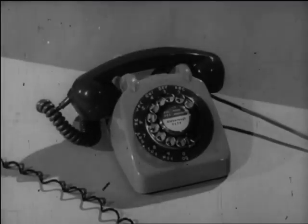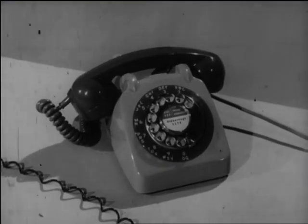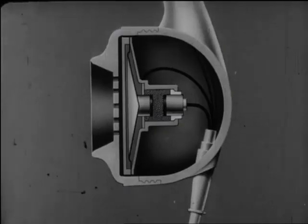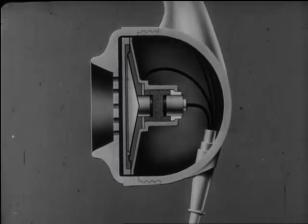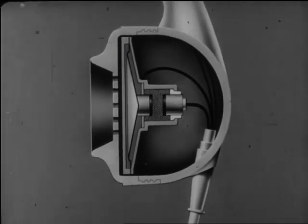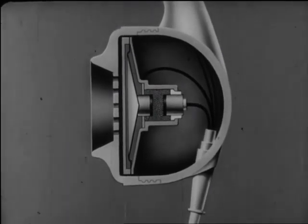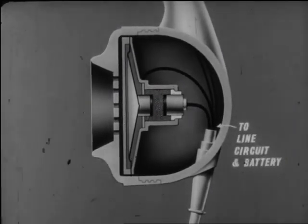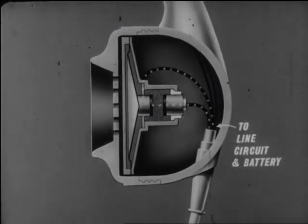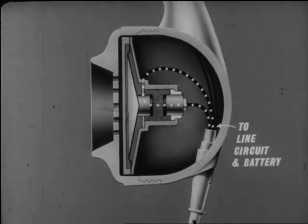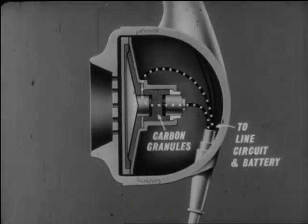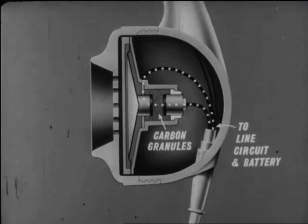In the modern telephone, we have overcome this difficulty, so let's see what changes have been made over the years. This is a diagram of a modern microphone. The first point to note is that it is powered by a battery. These two wires carry direct current from the battery and also connect the microphone to the telephone wires or line circuit. The second point to note is that the circuit is completed through a container filled with granules of carbon. We call the instrument a carbon granule microphone.